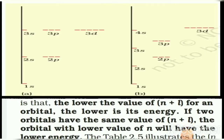Consider 4s and 3d orbitals. To find which has lower energy, calculate the n+l value. For 4s, n+l = 4+0 = 4. For 3d, n+l = 3+2 = 5. Since 4s has the lower n+l value of 4 compared to 3d's value of 5, the 4s orbital has lower energy than 3d.